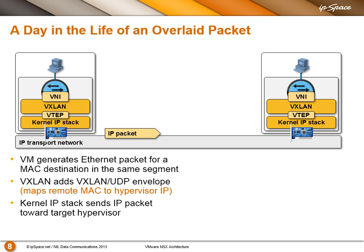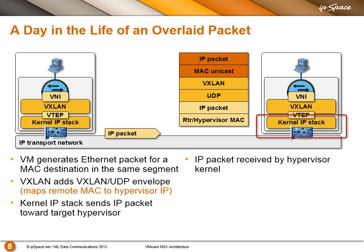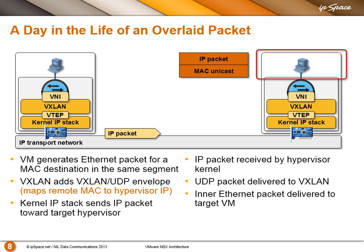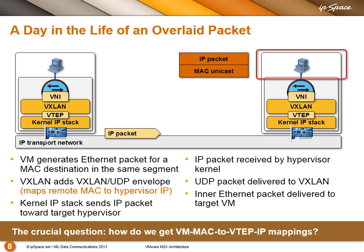Eventually the packet arrives on the other end. It hits the IP stack in the destination hypervisor. Based on the destination UDP port number, the hypervisor knows this belongs to the VXLAN encapsulation module and sends the packet there. The IP envelope is stripped, the UDP header is stripped, and the VXLAN header is used to find the segment number. The virtual switch then checks the destination MAC address in the payload packet and delivers it to the destination VM. The crucial question is: how do we get the mapping between VM MAC addresses and hypervisor IP addresses? I'll show you how that works with NSX.